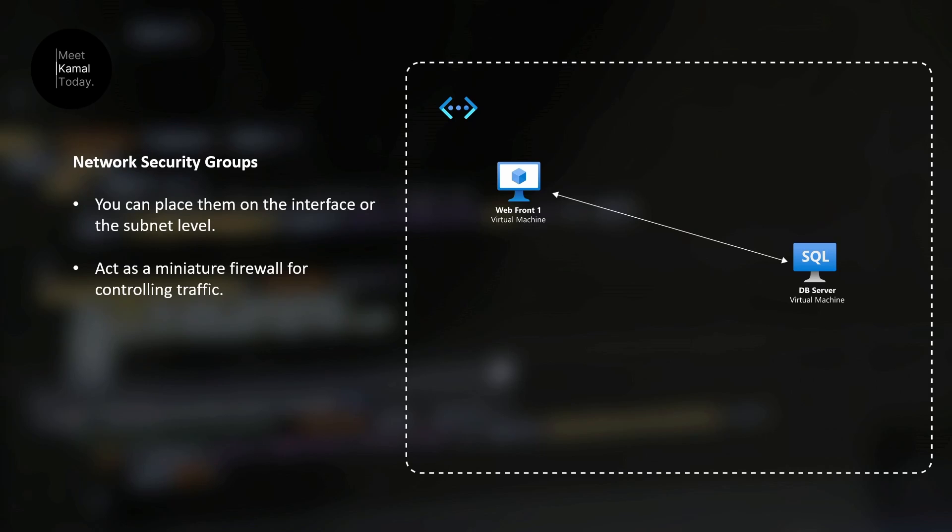With that understanding, let's understand what we are going to do today. Let's say we have one virtual network and in that virtual network, we have two virtual machines — a web frontend and a database server. I want this database server to be accessible only with this web frontend.